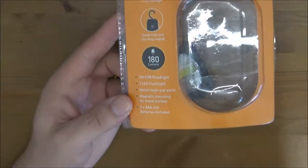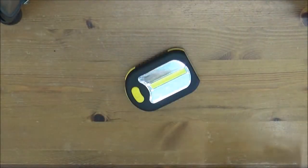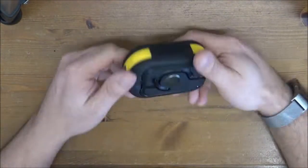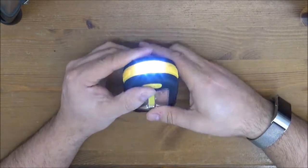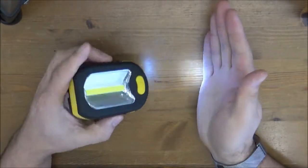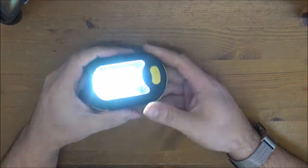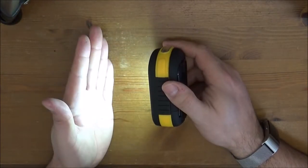This one says it's 180 lumens, it's a three watt chip on board, and it also has three LEDs in the front. It has three brightness settings - the three LEDs in the front, and there's the high brightness for the chip on board torch.